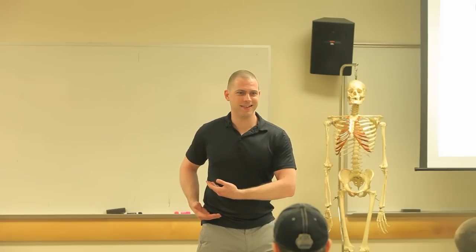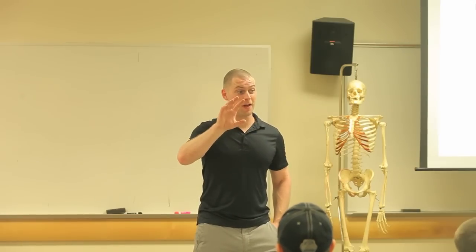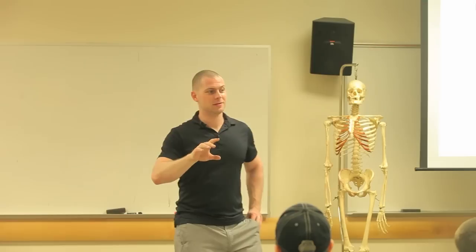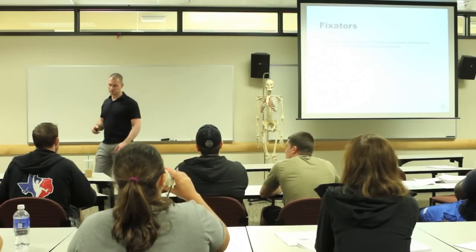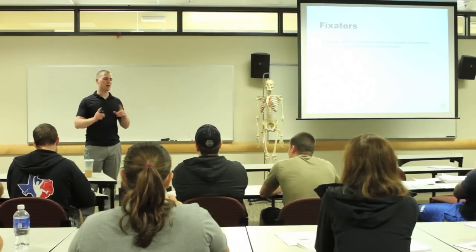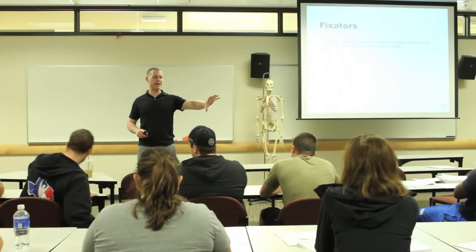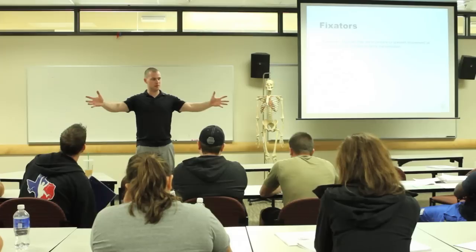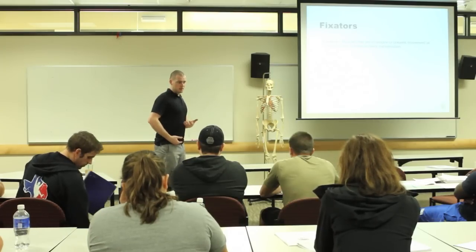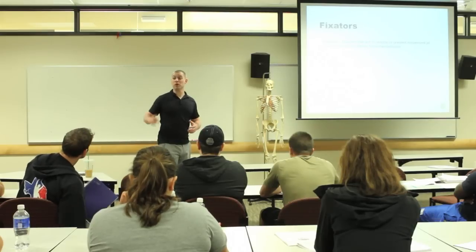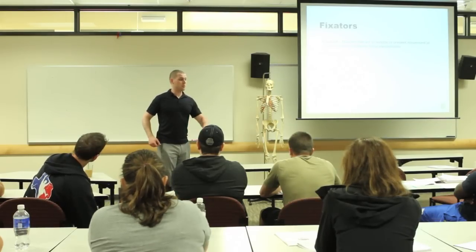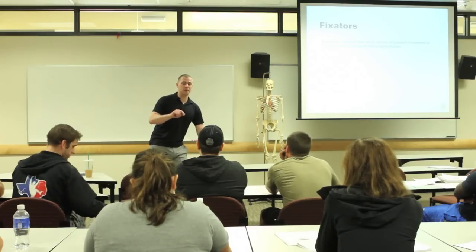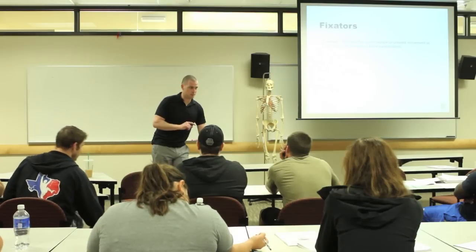Who would my stabilizers for my hip be? Deep rotators — those deep, deep muscles. In a wider definition of stability, the deep rotators of the hip are stabilizers for the hip. And someone said glute medius, and yesterday I said that the glute medius was the primary frontal plane stabilization mechanism of the pelvis.